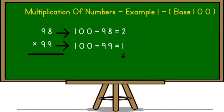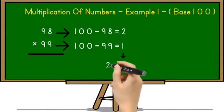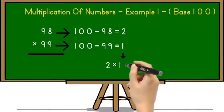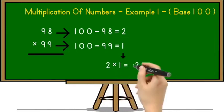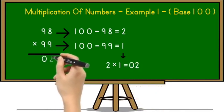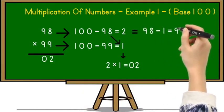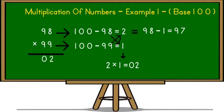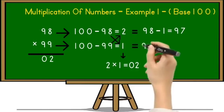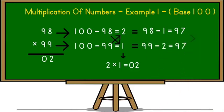Now multiply 2 and 1 together. So 2 × 1 is equal to 2 and to make it 2 digit number we have to put 0 before 2 and write down this 02 in a product. After that we have to subtract 1 from 98. So 98 minus 1 is equal to 97. Now subtract 2 from 99. So 99 minus 2 is equal to 97.